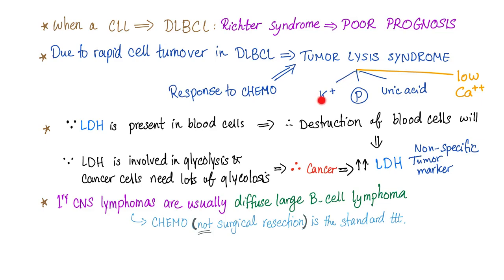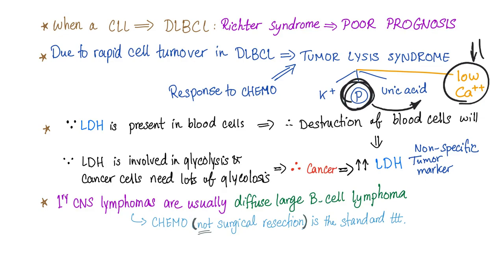In tumor lysis syndrome, you will have high potassium, high phosphate, and high uric acid in the blood, but low calcium. This is because the released phosphate binds to calcium, resulting in low free calcium in the blood. LDH is usually high as well.